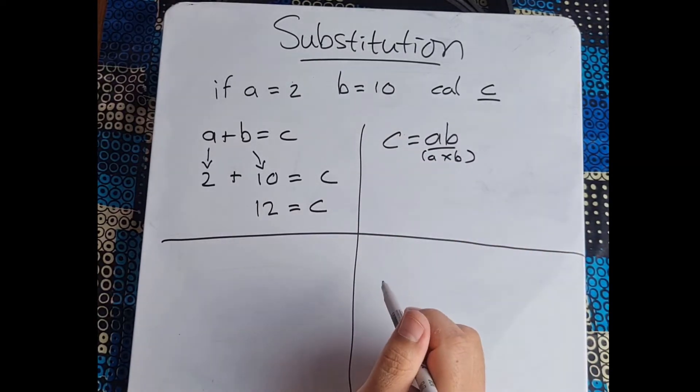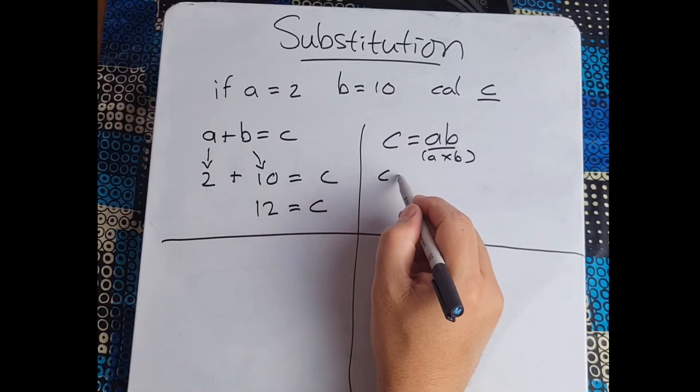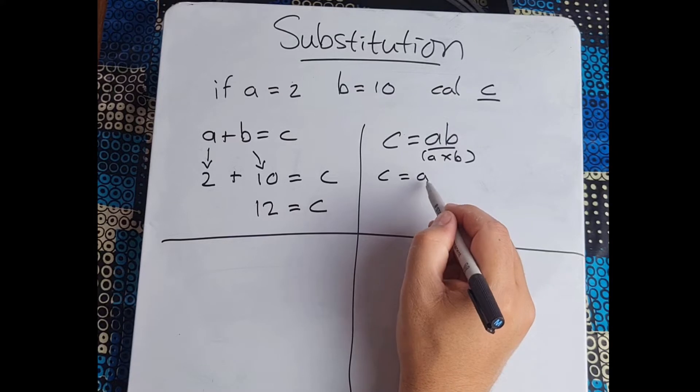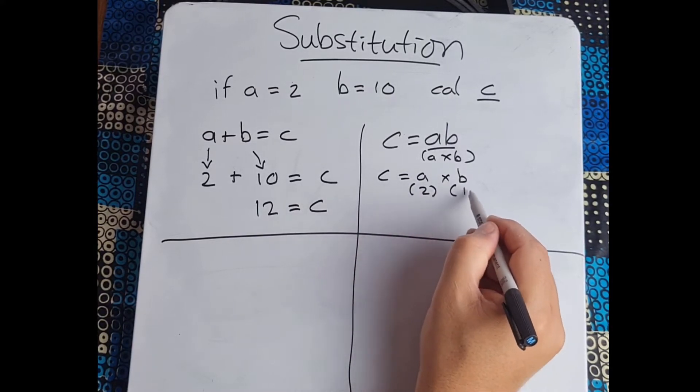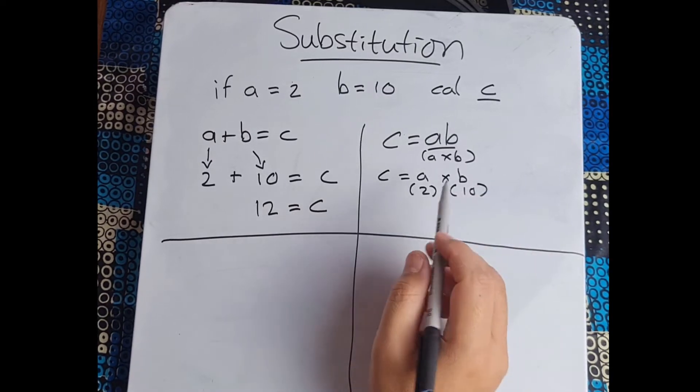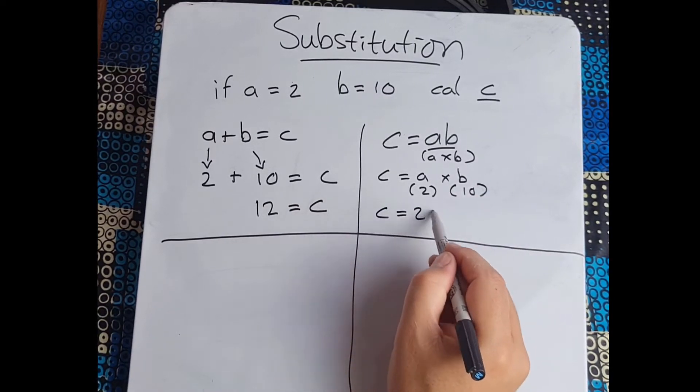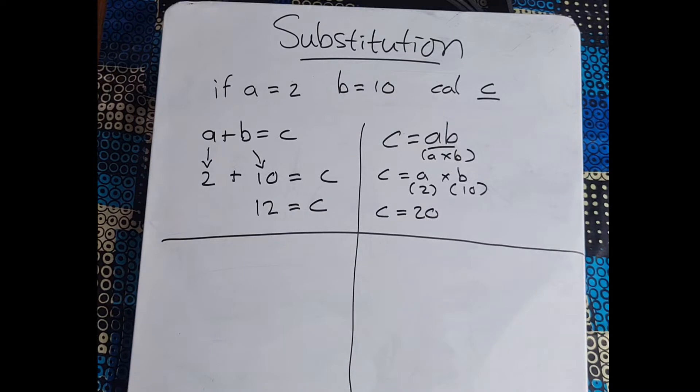So do we have the values for a and b? Yes we do. C equals a which will be 2 multiplied by b, what is b? 10. And so 2 times 10 we know is 20 and therefore c equals 20.